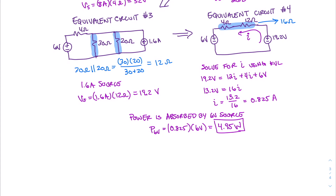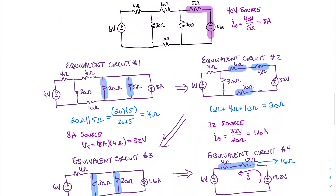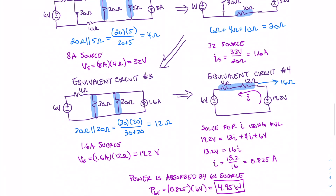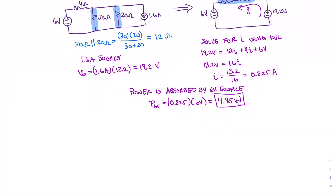Now we can see how through a series of repeated steps, we can take a complex circuit where we can't do any resistive simplifications and perform a series of source transformations back and forth from voltage to current and current to voltage to simplify the circuit down and find the answer we were looking for. That concludes this video of Unwired Learning.